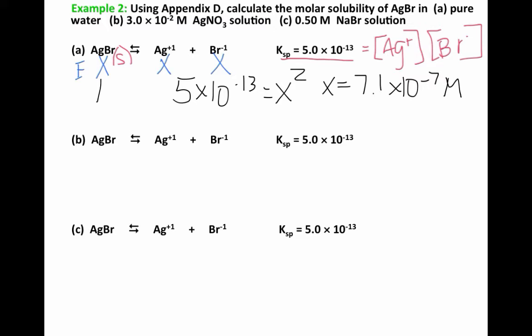AgBr is equal to X, so this is our answer. This is in pure water, meaning if you put solid silver bromide into a beaker of pure water, this is what the concentration would be. As we go through parts B and C, we'll be able to compare so you can check and see.